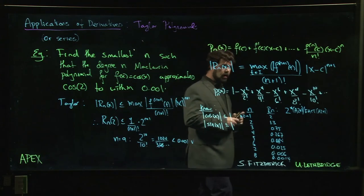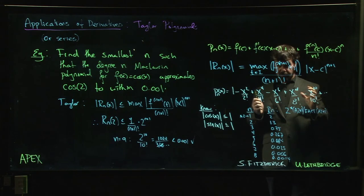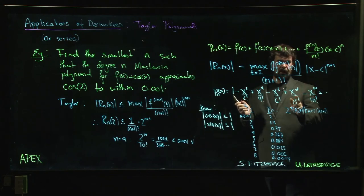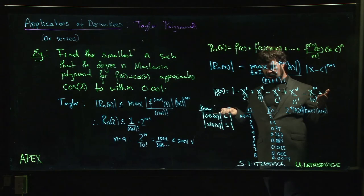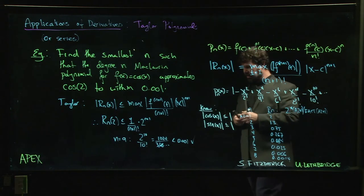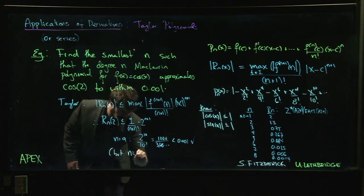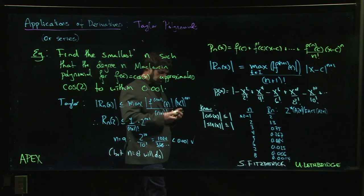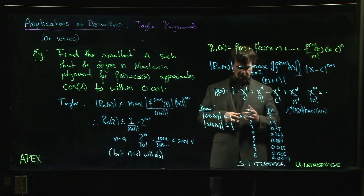But that's not quite the end of the story because here's our polynomial. The coefficient of x to the 9 in the Maclaurin polynomial for cos is 0. So I can actually stop at 8, because the degree 9 Maclaurin polynomial is the same as the degree 8 Maclaurin polynomial. Because when you go to degree 9 you're adding 0, nothing changes. So in fact, n equals 8 will do.